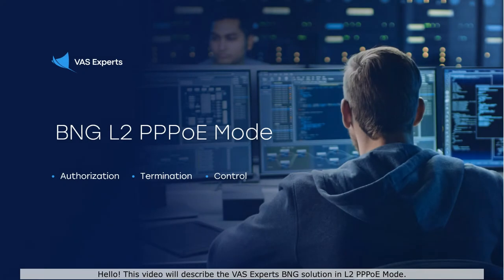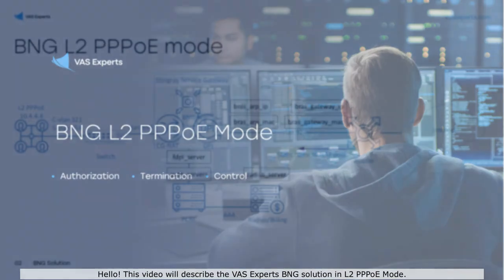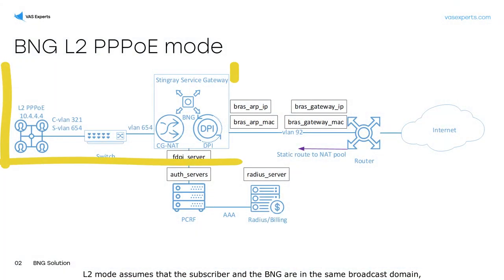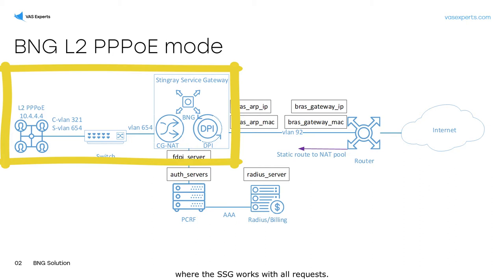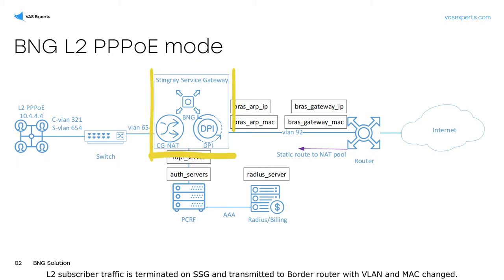Hello. This video will describe the VAS Experts BNG solution in L2PPPoE mode. L2 mode assumes that the subscriber and the BNG are in the same broadcast domain, where the SSG works with all requests. L2 subscriber traffic is terminated on SSG and transmitted to the border router with VLAN and MAC changed.